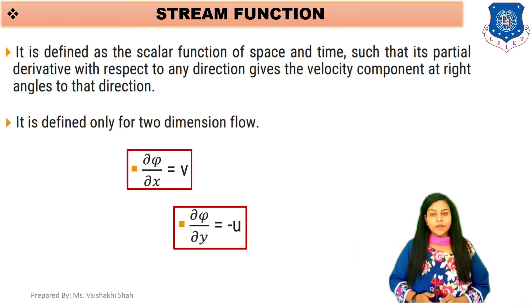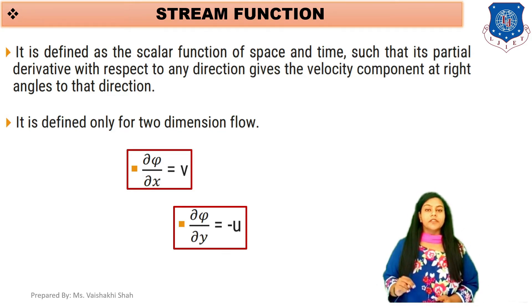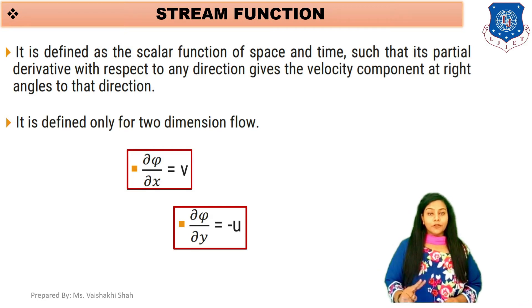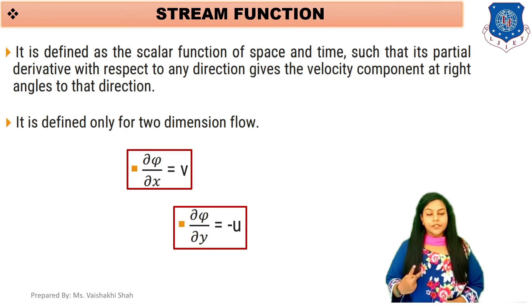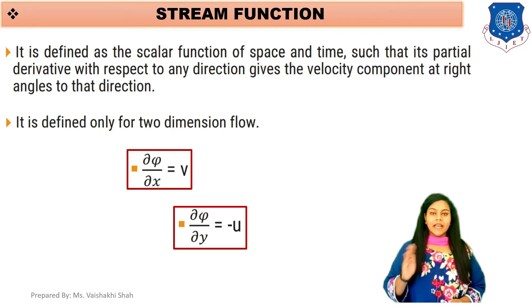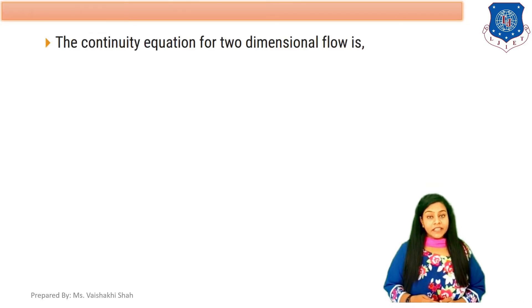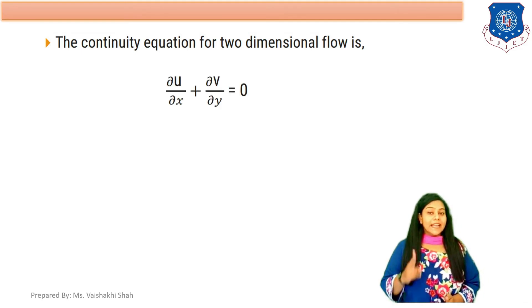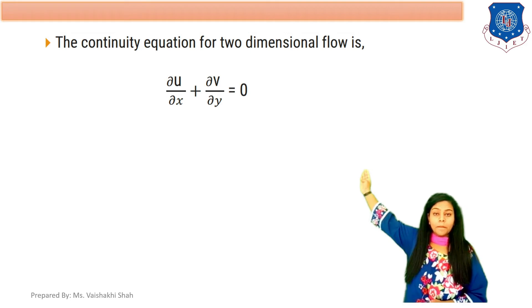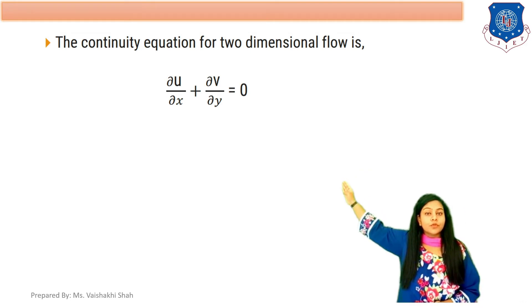Stream function is defined only for two-dimensional flow. Remember that stream function is only for 2D flow — there are two directions only, x and y. The continuity equation for two-dimensional flow is: del u by del x plus del v by del y equals to 0.